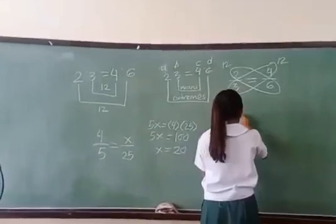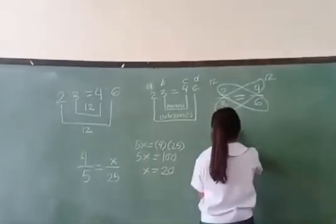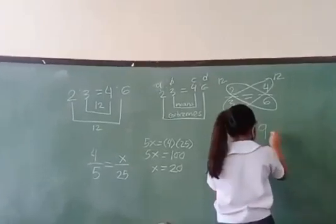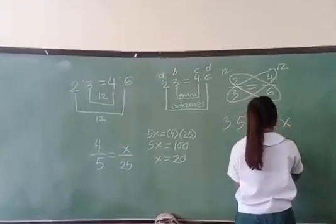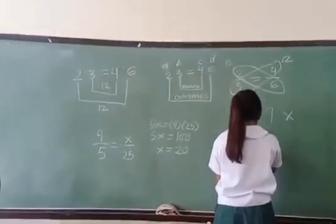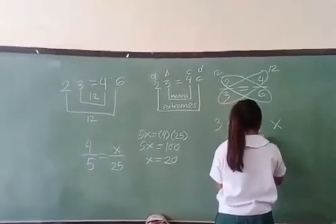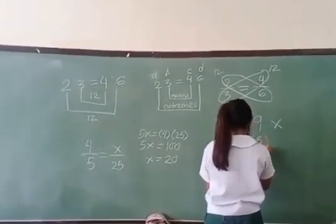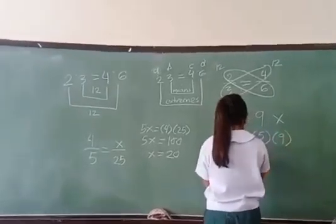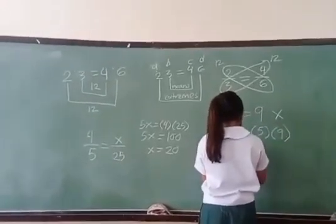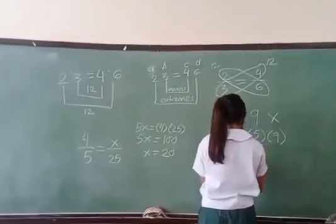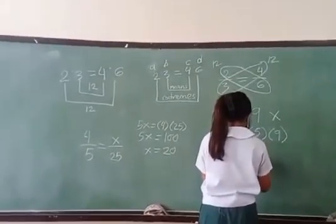Now, without a fraction line: 3 to 5 equals 9 to x. Remember means and extremes. 3 times x equals 3x. 5 times 9 equals 45. Divide 45 by 3 — the answer is 15.